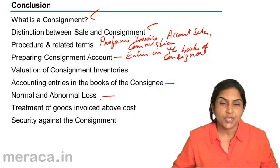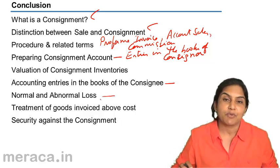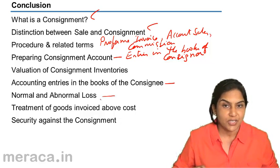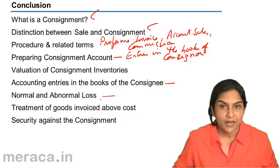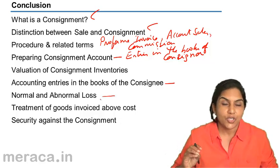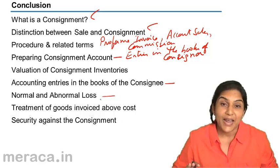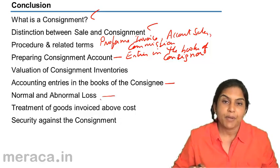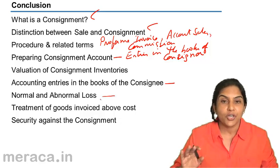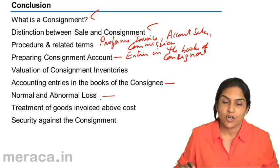Any insurance claim received is adjusted against the abnormal loss account, and the net abnormal loss is taken to the profit and loss account. As far as normal loss is concerned, there is no separate entry. However, when abnormal loss or closing stock is valued, all good units are priced slightly higher because the cost is spread over all good units — that is, total units less normal loss.